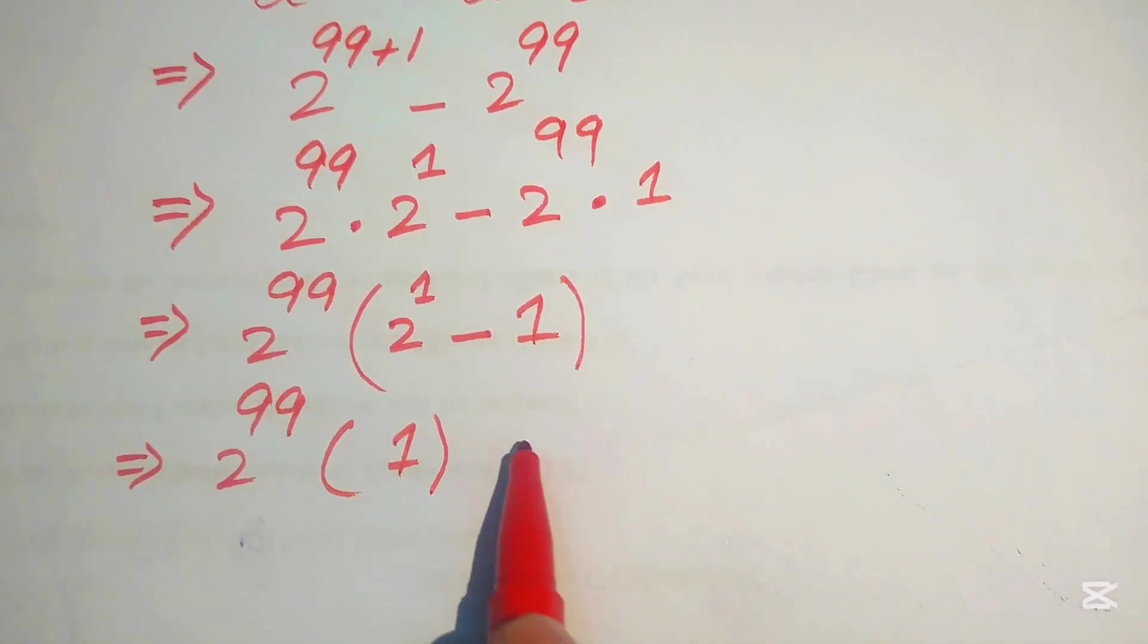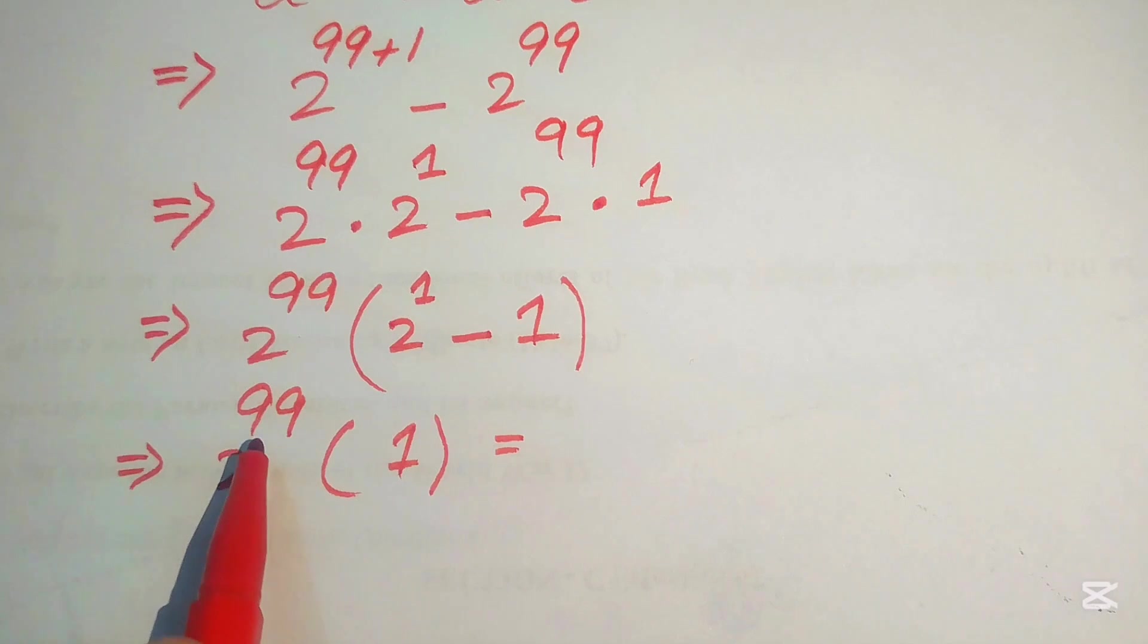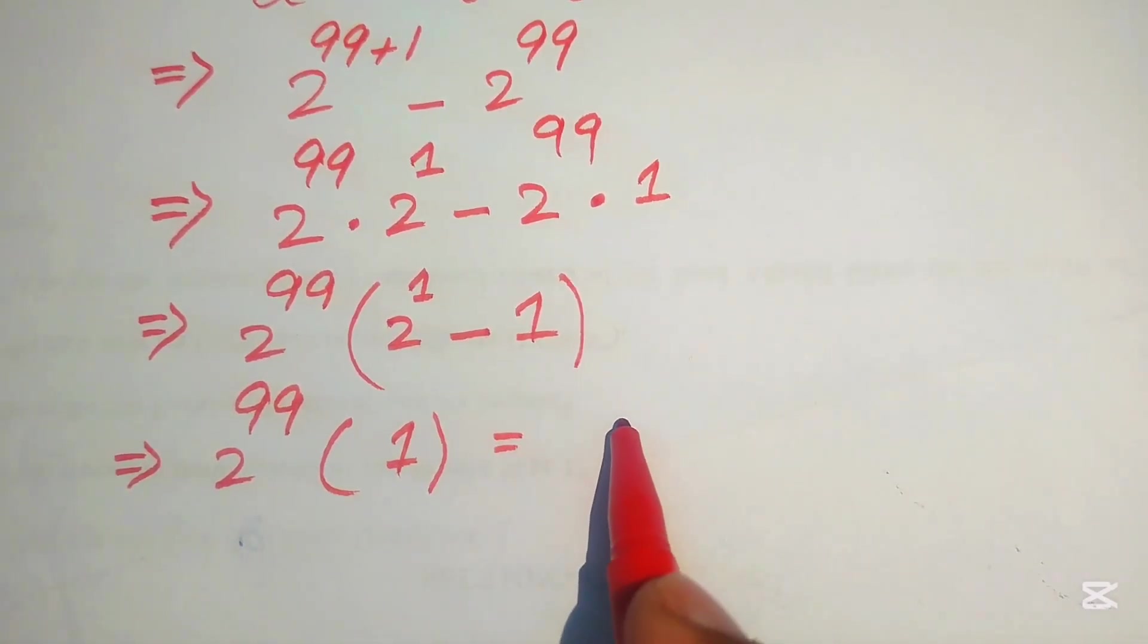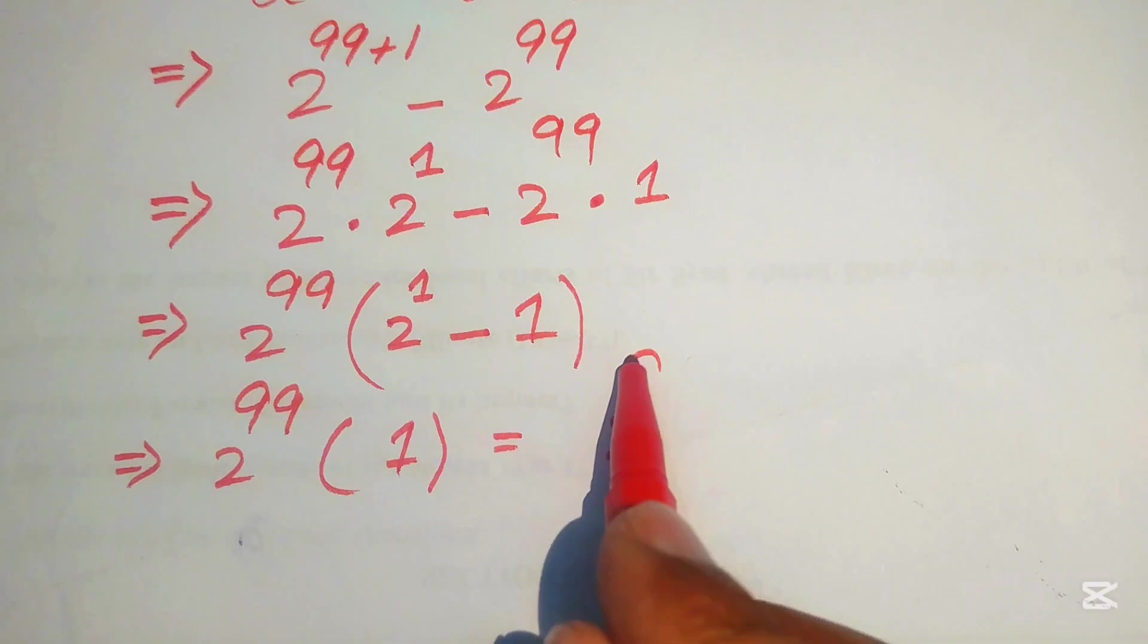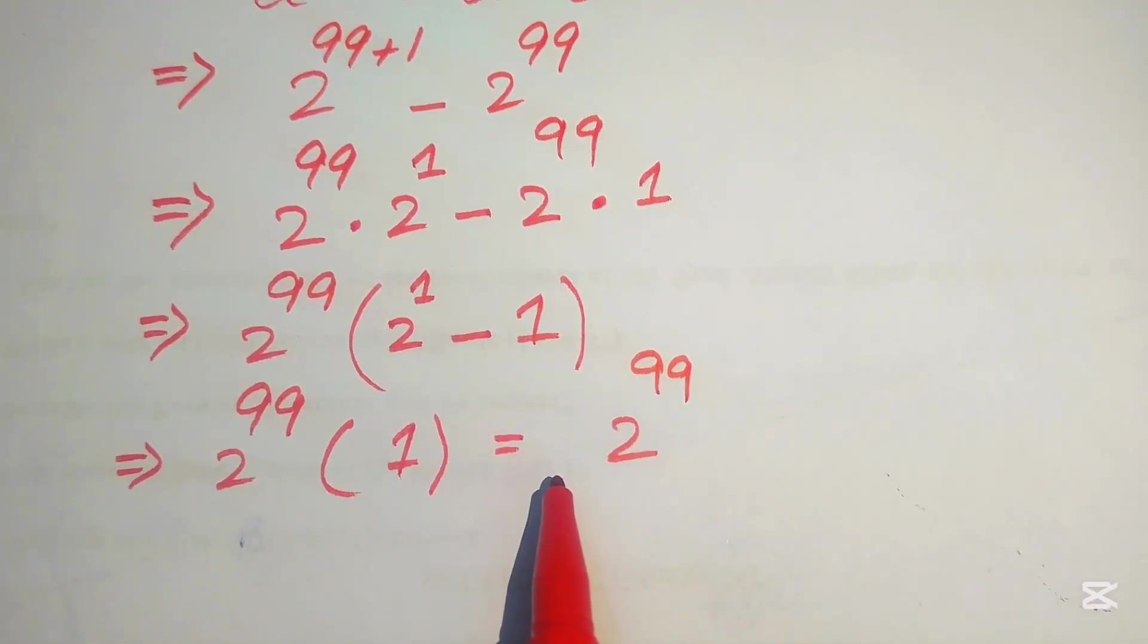And now when you multiply 2 to the power of 99 by 1, you can easily get the final answer is 2 to the power of 99.